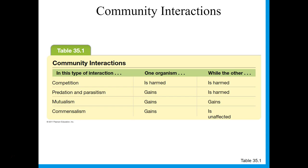Here are the four different types of community interactions. Competition: both organisms are harmed — if you are squirrels fighting for acorns, you're both going to do worse as a result. Predation and parasitism: one organism gains while the other is harmed. The predator gains and the thing it eats does not — getting eaten by an eagle is not what the snake wants to do with its life.